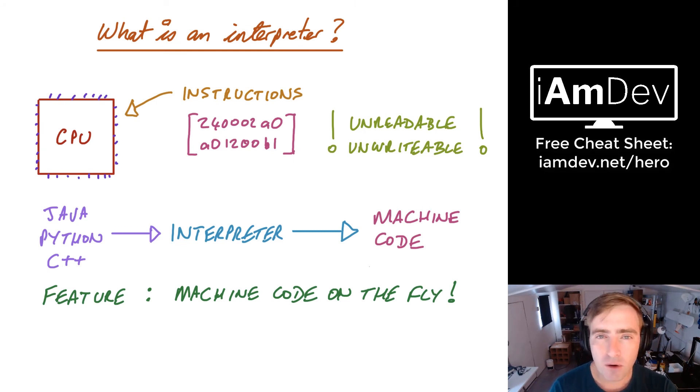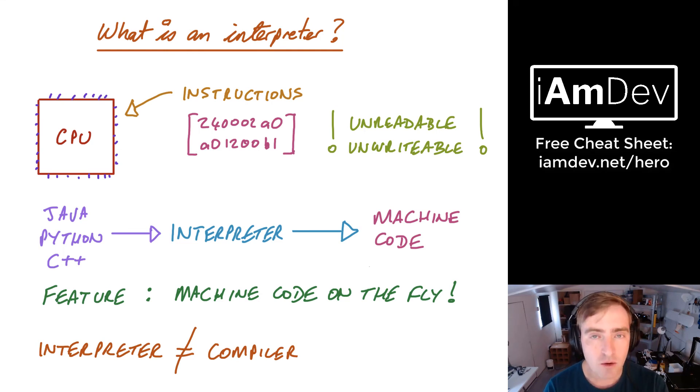Now it's important to note that an interpreter is not a compiler. So if you go into an interview and they ask you this question and you mention compiler equal to interpreter, then you fail the interview basically, because you don't know the difference between the two. A compiler compiles at build time and an interpreter creates machine code on the fly at runtime.